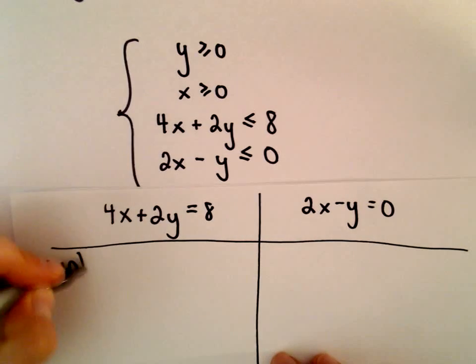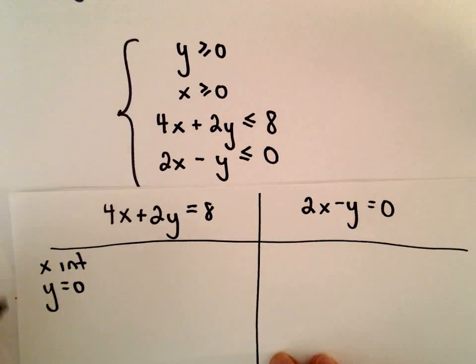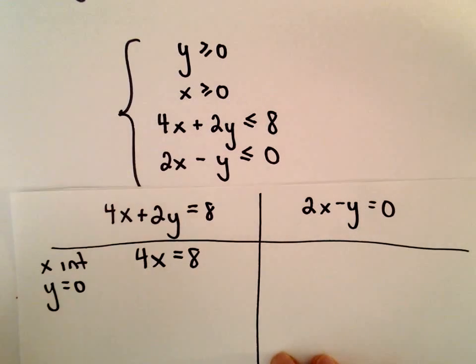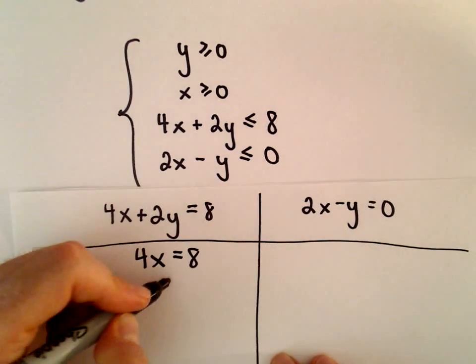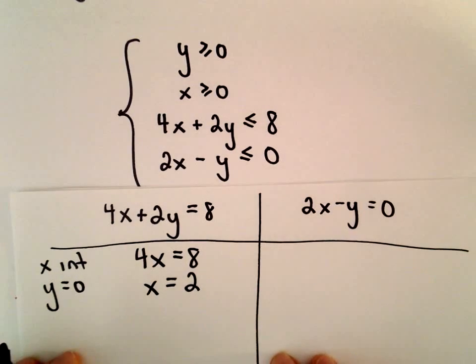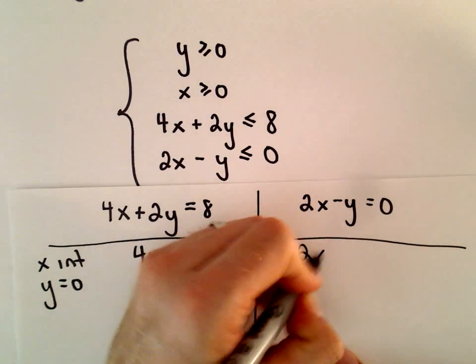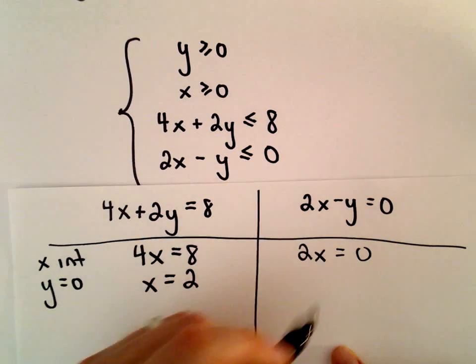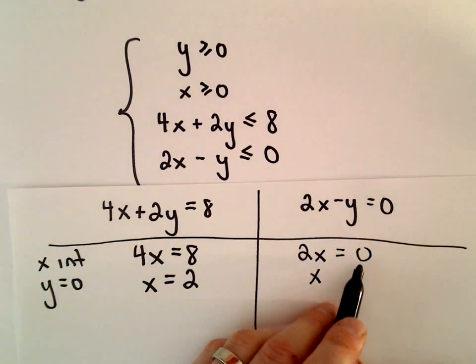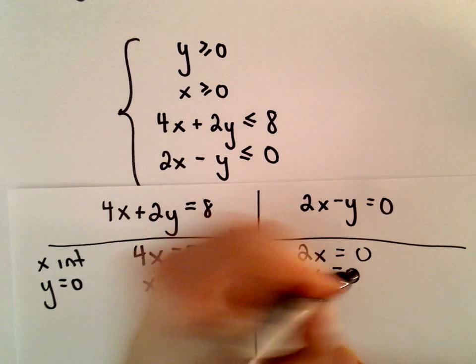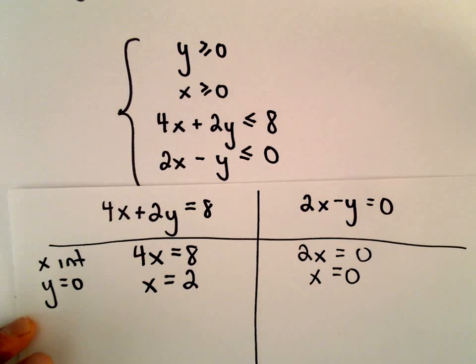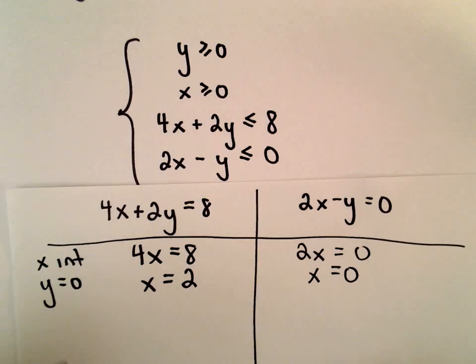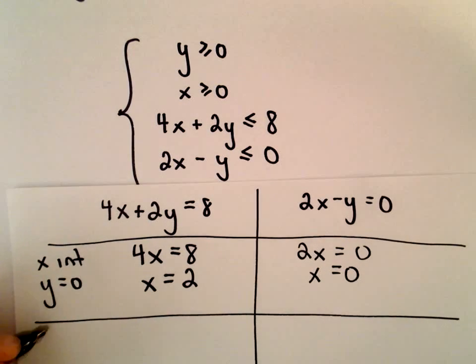So to find the x-intercept, we can simply let y equal 0. For the first equation, we'll be left with 4x equals 8. If we divide both sides by 4, we'll have x equals 2. For the second one, we'll have 2x equals 0. If we divide both sides by 2, we'll just get x equals 0. So this one's not going to be as useful because, well, we'll see in just a second.